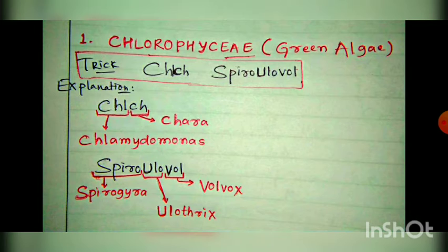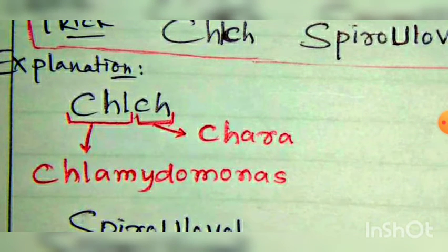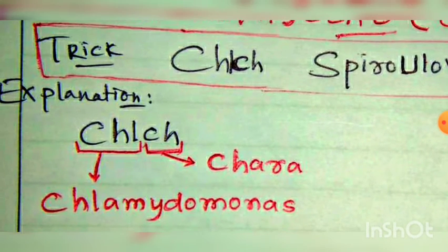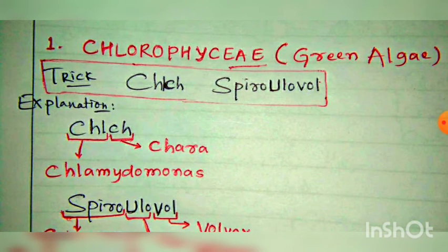In the trick we have two segments: 'clutch' and 'spirohulo valve'. The first segment has two examples — 'chl' is Chlamydomonas and 'ch' is Chara. 'Chl' also represents the class Chlorophyceae, through which you can easily remember the examples and which class they belong to.